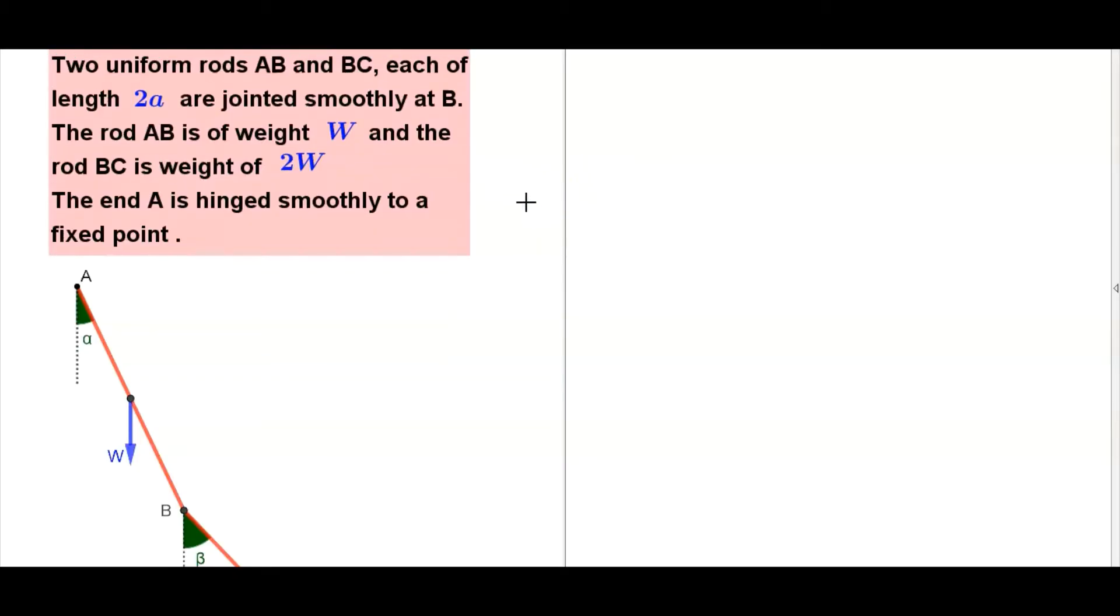2019 August past paper question two. Two uniform rods AB and BC, each of length 2a, are jointed smoothly at B. The rod AB is of weight W and the rod BC of weight 2W. The end A is hinged smoothly to a fixed point.